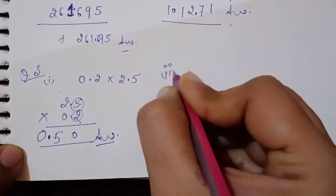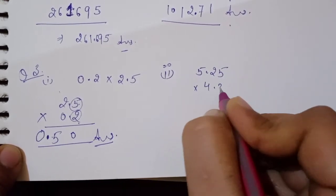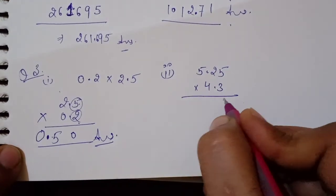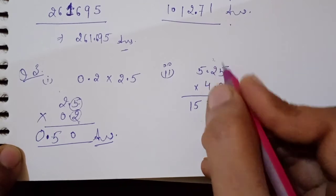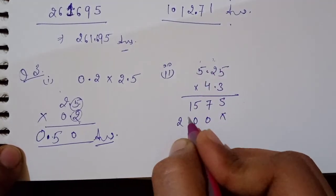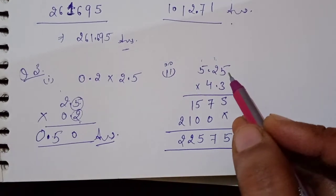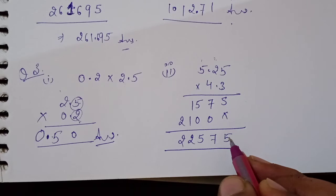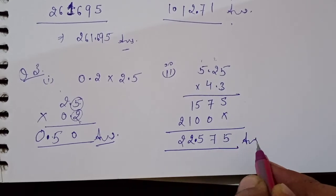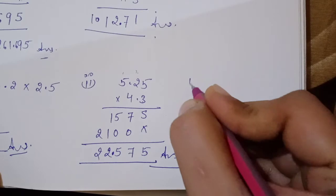Count the decimal places — one from the top number and one from the bottom — total two. Count two from the right and place the decimal. Before the decimal there must always be a digit; if nothing is there, put zero. So the answer is 0.50. Next: 5.25 × 4.3. Write the greater number on top: 3×5=15, 3×2=6, 3×5=15; then 4×5=20, 4×2=8, 4×5=20.